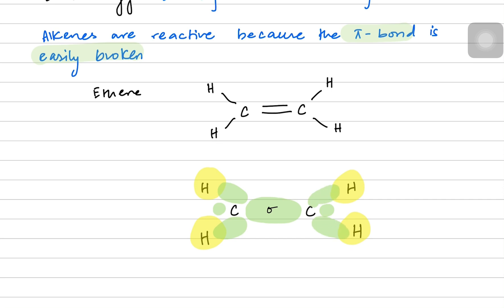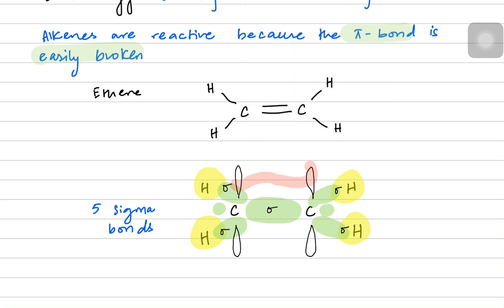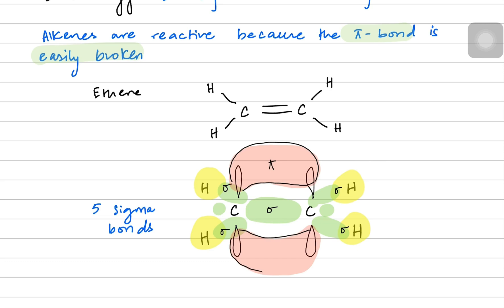So you can see there's a total of five sigma bonds in ethene. But you should remember there are also pi bonds. Each carbon has an unhybridized p orbital which makes the pi bond. The pi bond has electron density above and below the internuclear axis — like a kidney bean-shaped structure.